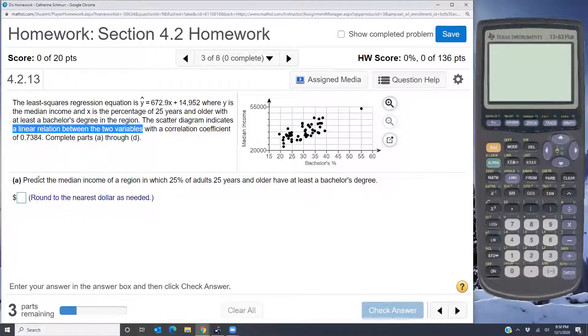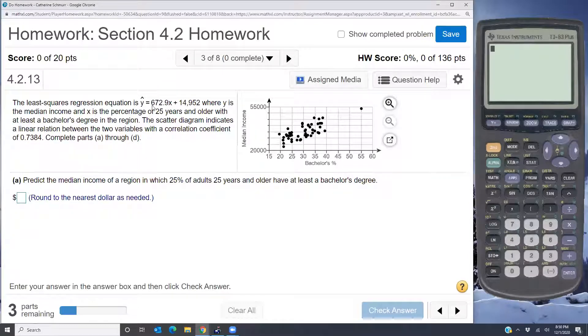So part A says predict the median income of a region in which 25 percent of adults 25 years and older have at least a bachelor's degree. So because we have that linear relation we can actually use this equation.